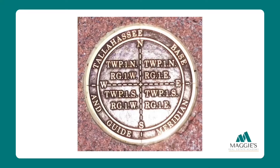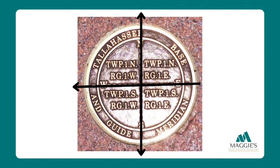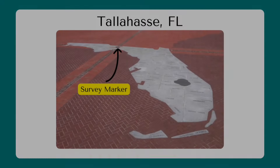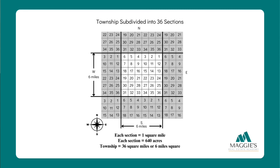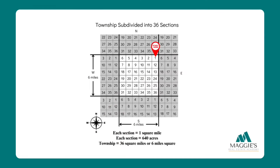For example, the state of Florida was surveyed using this method, beginning in Tallahassee — Florida's capital — where a north-south line called the Tallahassee Principal Meridian intersects the east-west line called the Tallahassee Baseline. All legal descriptions in Florida originate from this point, which is literally a survey marker in the ground. Florida and many other states are subdivided into squares called townships — parallel lines at six-mile intervals. A township is six miles square, or 36 square miles, numbered from the northeast corner, right to left then left to right like a snake, until you reach 36.